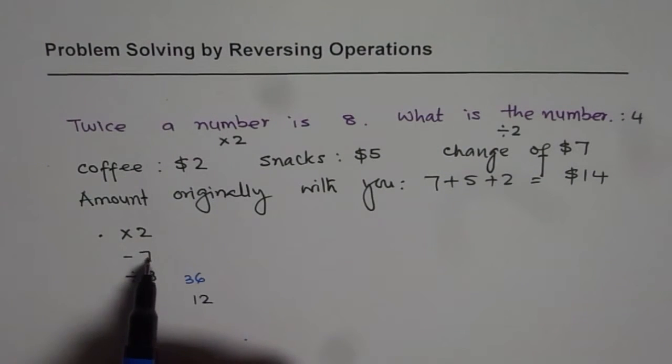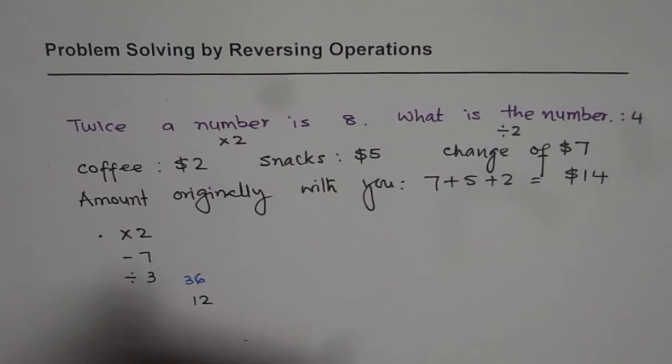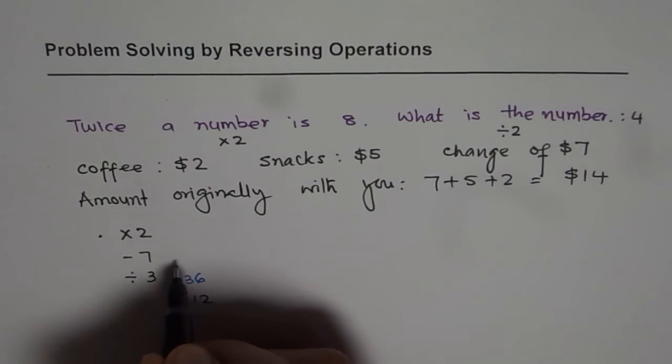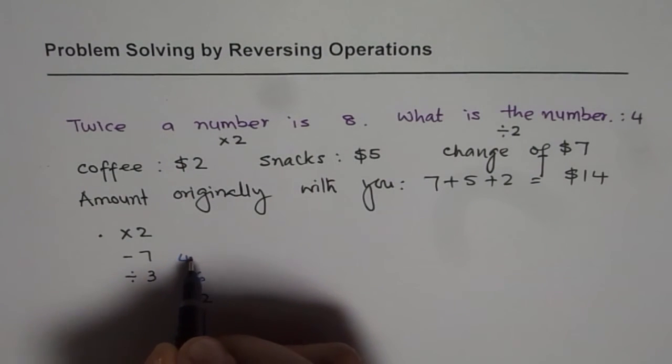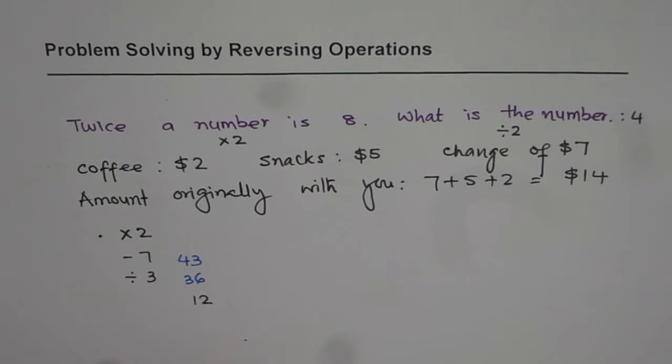Now, we took away 7. Let us add 7 to this. So, 7 plus 36 will be 43. Now, you did twice the number.